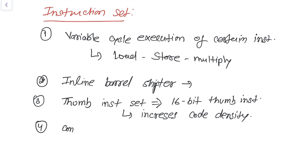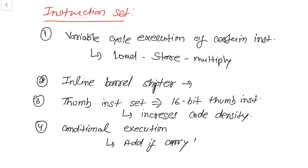Another feature is conditional execution. In conditional execution, an instruction is only executed when a specific condition has been satisfied — for example, add-if-carry, add-if-overflow, add-if-result-is-zero, branch-if-carry, branch-if-overflow, branch-if-zero, multiply-if-carry. These types of instructions are known as conditional instructions.